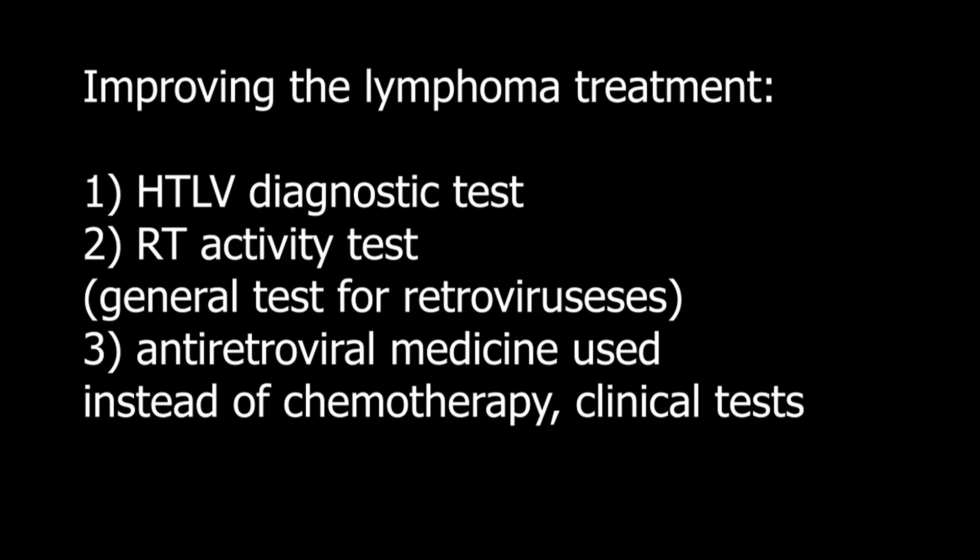We could improve the treatment of leukemia and lymphoma disease by following these steps. First, run a diagnostic test to see if HTLV virus is present in the body of the patient. Second, run a general reverse transcriptase activity test to see if there might be similar retroviruses. Third, test antiretroviral medicine developed to fight HIV virus as an antitumor cure in a process called clinical testing. During this process, antiretrovirals such as RT and protease inhibitors would be used to treat lymphoma instead of classic chemotherapy. This should especially apply in cases where HTLV or other retroviral activity is proven to exist. If this step is successful, then we have made a very deadly disease less deadly. Thank you for your time.